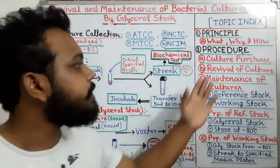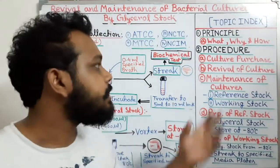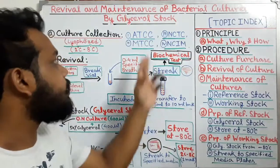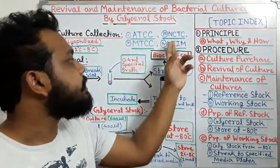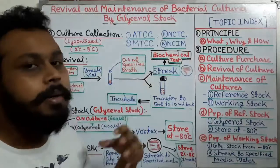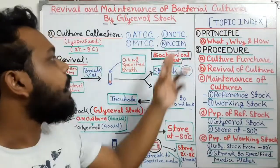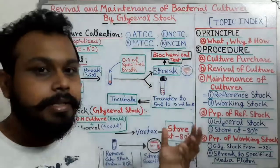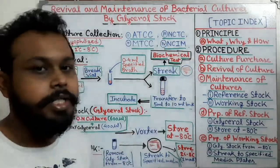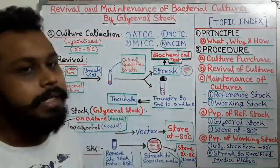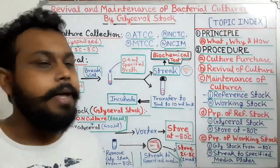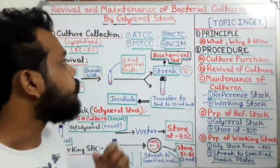The first step is culture purchase — from where we can purchase the culture. We have to purchase the culture from culture collection organizations: ATCC, MTCC, NCTC, and NCIM. ATCC means American Type Culture Collection, MTCC is Microbial Type Culture Collection, NCTC is National Collection of Type Culture, and NCIM is National Collection of Industrial Microorganisms.